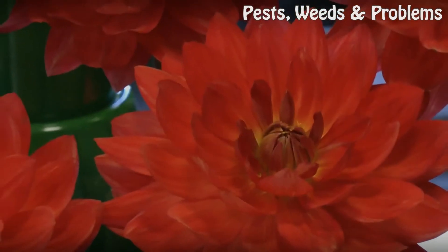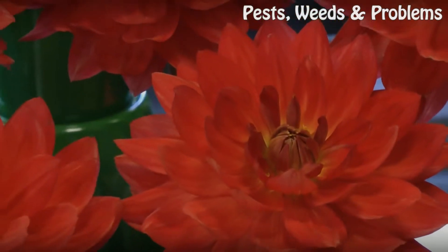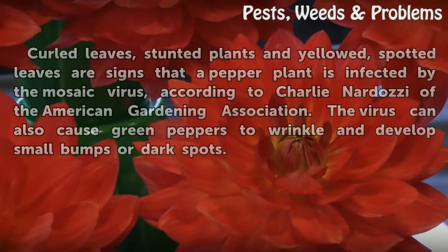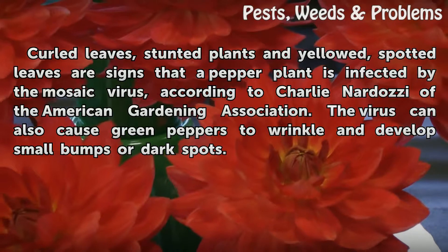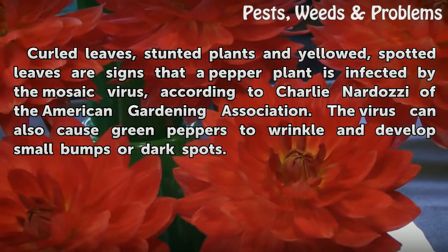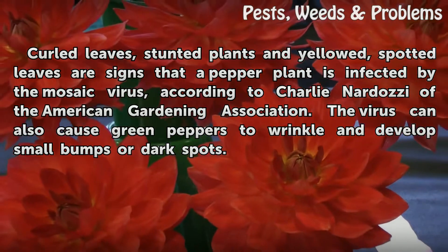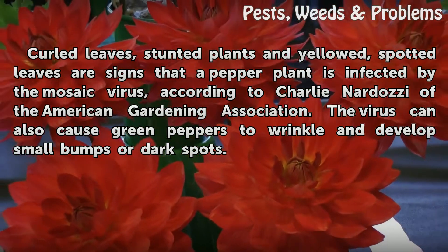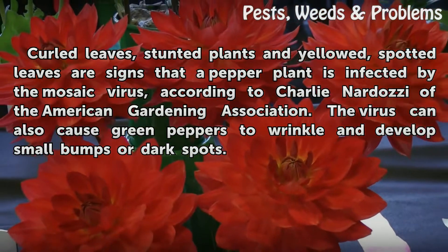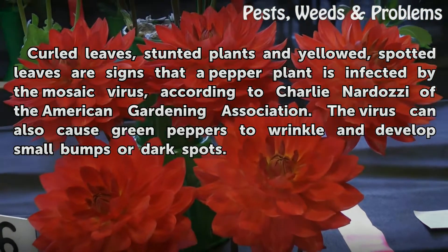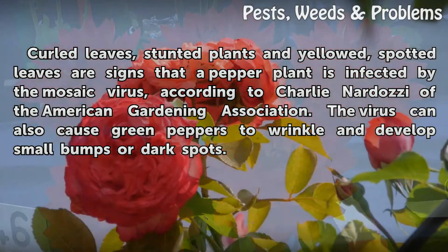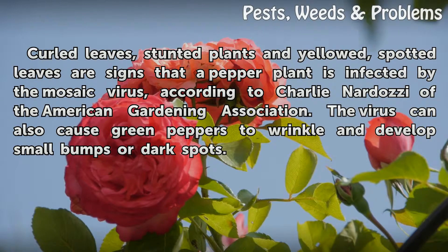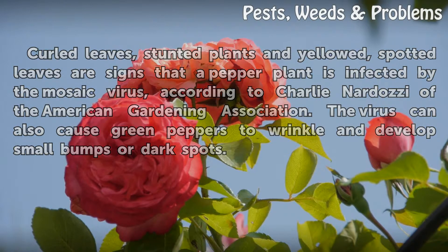Symptoms: Curled leaves, stunted plants, and yellowed spotted leaves are signs that a pepper plant is infected by the mosaic virus, according to Charlie Nardozzi of the American Gardening Association. The virus can also cause green peppers to wrinkle and develop small bumps or dark spots.